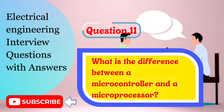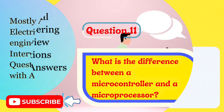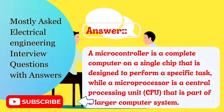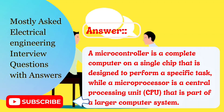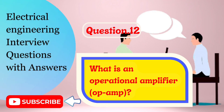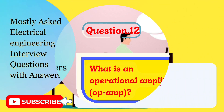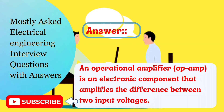Question 11: What is the difference between a microcontroller and a microprocessor? A microcontroller is a complete computer on a single chip that is designed to perform a specific task, while a microprocessor is a central processing unit, CPU, that is part of a larger computer system. Question 12: What is an operational amplifier? An operational amplifier, OP-AMP, is an electronic component that amplifies the difference between two input voltages.